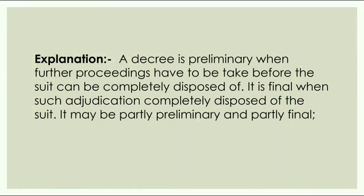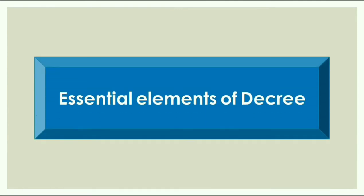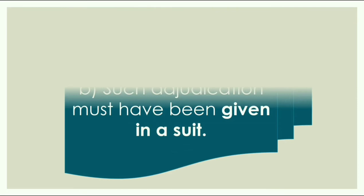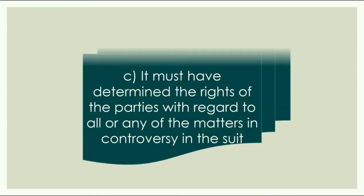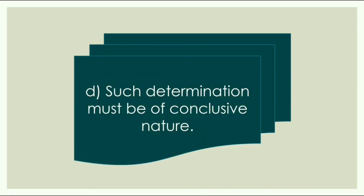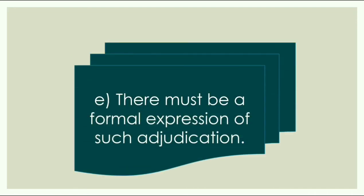Now we will understand the term decree step by step, that is the essential elements of decree. In order that a decision of a court may be a decree, the following elements must be present: first, there must be an adjudication; second, such adjudication must have been given in a suit; third, it must have determined the rights of the parties with regard to all or any of the matters in controversy in the suit; fourth, such determination must be of a conclusive nature; and fifth, there must be a formal expression of such adjudication.